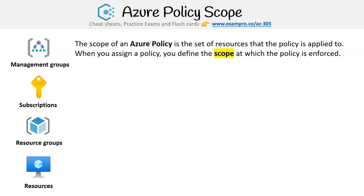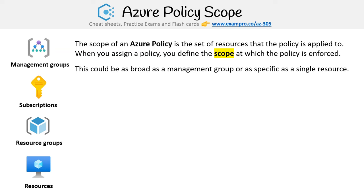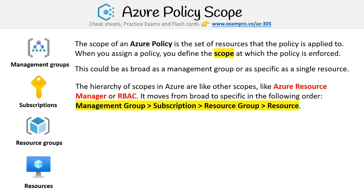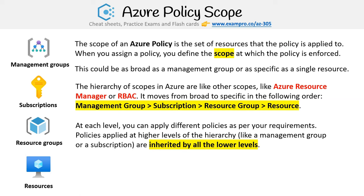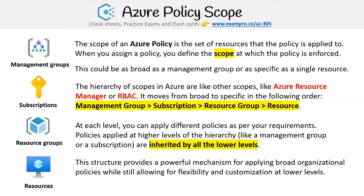The scope of an Azure policy is the set of resources the policy is applied to. When you assign a policy, you define the scope at which the policy is enforced — this could be as broad as a management group or as specific as a single resource. The hierarchy of scopes moves from broad to specific: management group → subscription → resource group → resource. Policies applied at higher levels of the hierarchy are inherited by all lower levels, providing a powerful mechanism for applying broad organizational policies while still allowing for flexibility at lower levels.